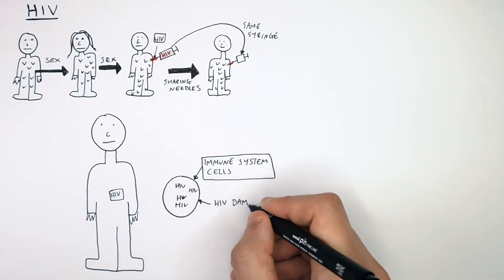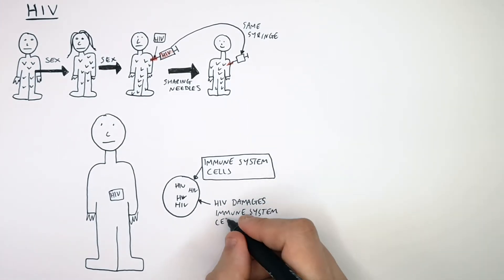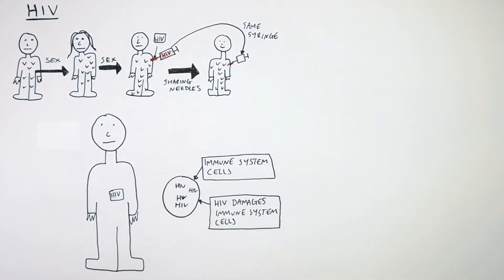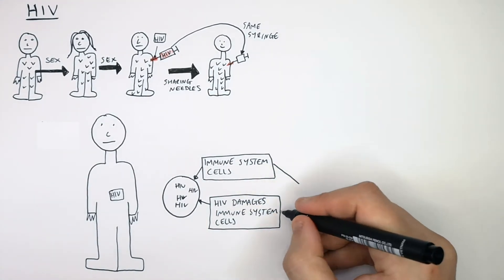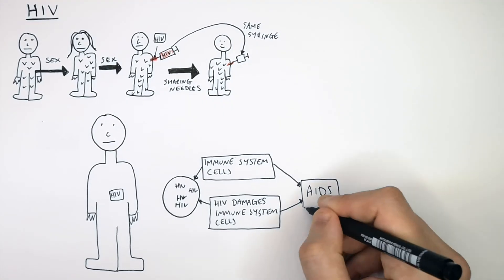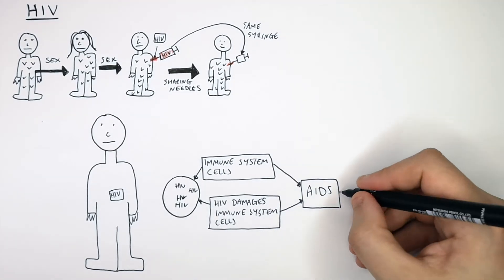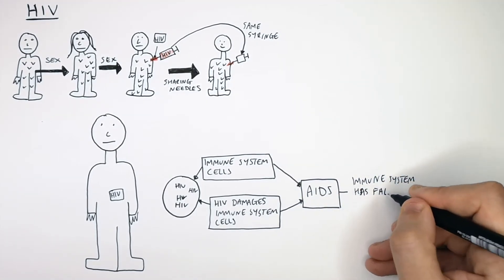So HIV, the virus, damages immune system cells. And once the immune system has been damaged completely, the person will then have AIDS. AIDS is when the immune system has failed for that person.